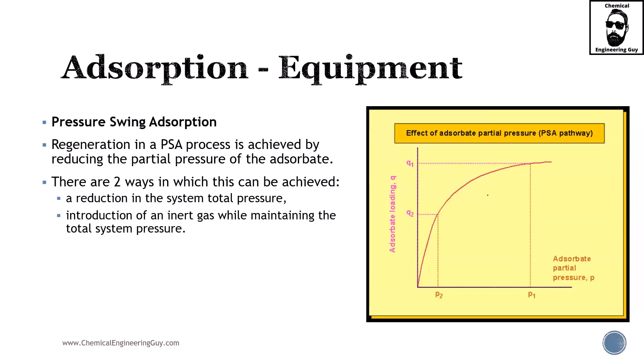We then change to pressure swing adsorption, which is also a very important column to analyze. As you can imagine, pressure will swing or will favor the adsorption or desorption depending on the conditions. Regeneration in a PSA, which is pressure swing adsorption process, is achieved by reducing the partial pressure of the adsorbate, meaning we are decreasing the pressure overall. Typically when we decrease pressure, adsorbent is going to leave the active sites or the so-called holes.